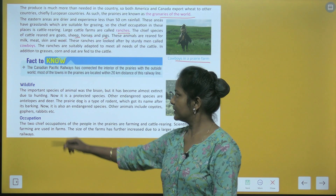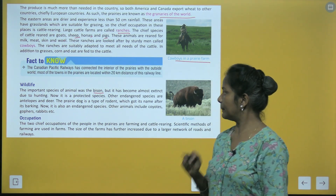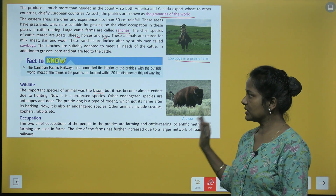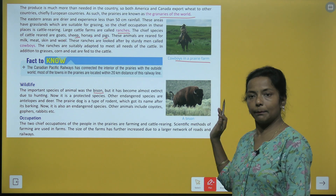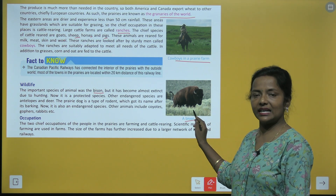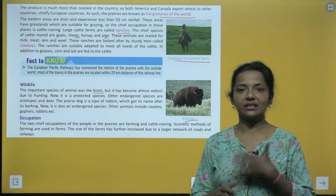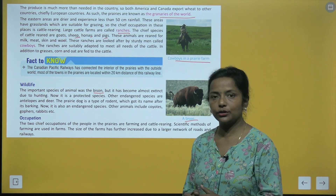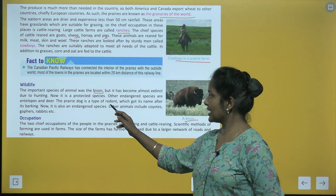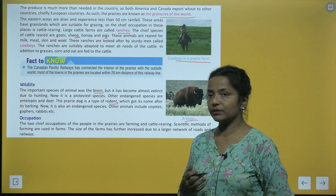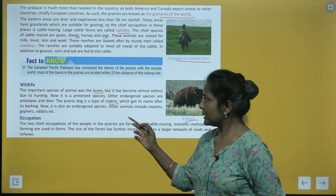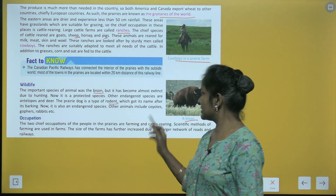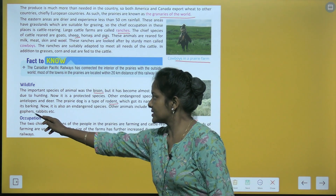Wildlife: the important species of animal was the bison, but it has become almost extinct due to hunting — now it is a protected species. Other endangered species are antelopes and deer. The prairie dog is a type of rodent which got its name after its barking, and it is also an endangered species. Other animals include coyotes, gophers, and rabbits.